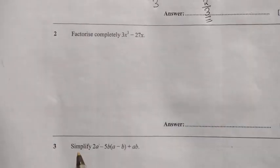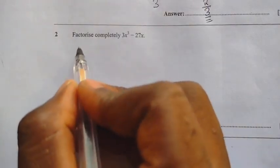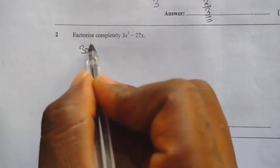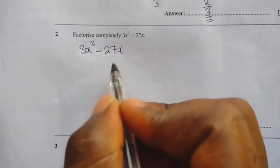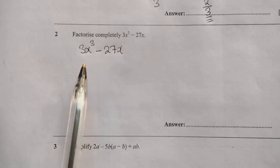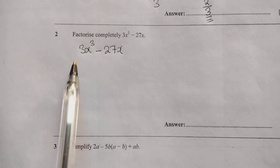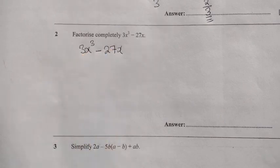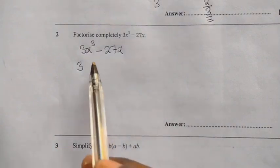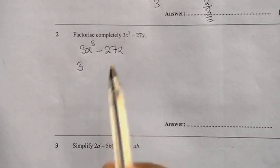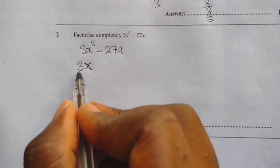We now come to question B: factorize completely. The question is 3x cubed minus 27x. We want to factorize this. First, take a look at the numbers — we have 3 and 27. The highest common factor of 3 and 27 is 3. So we factor out 3. In terms of letters, we have x cubed and x, so x is also common.